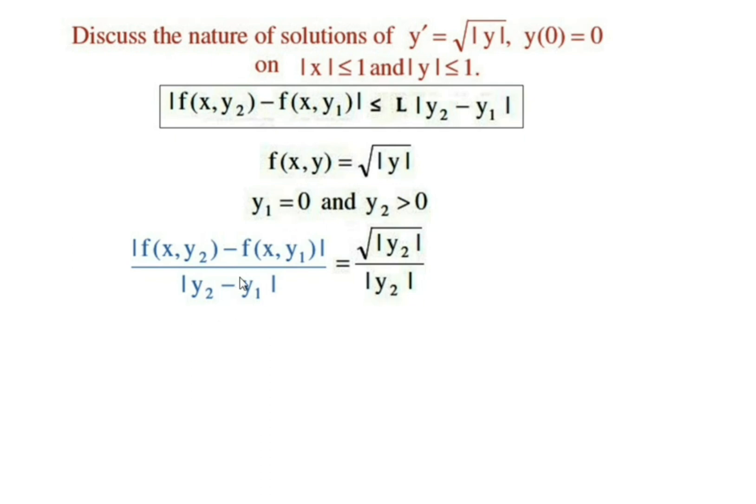Therefore, the numerator expression becomes √|y₂| divided by |y₂ - y₁|, which becomes |y₂|. Since y₂ is positive and y₁ is 0, we obtain |y₂|. On simplification, we have obtained 1/√y₂. Since y₂ is positive, |y₂| is only y₂. So, √y₂/y₂ = 1/√y₂.